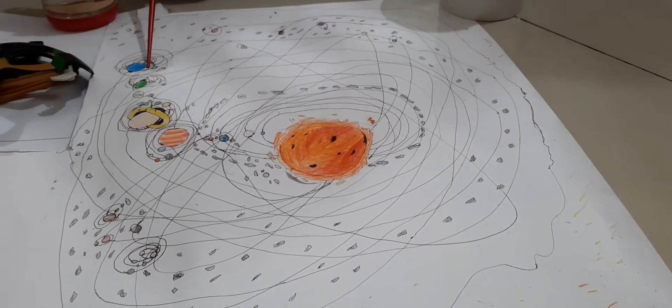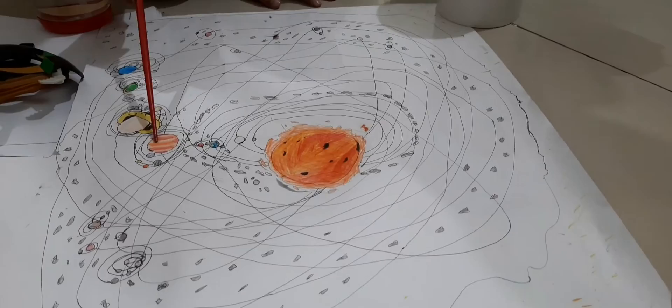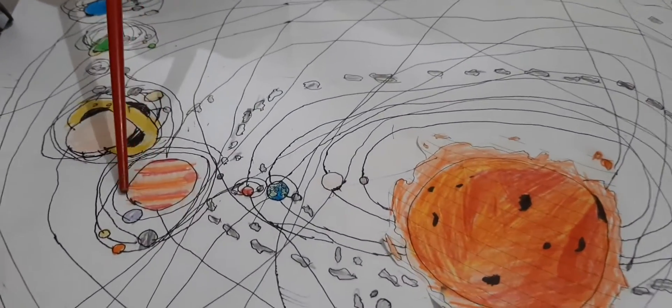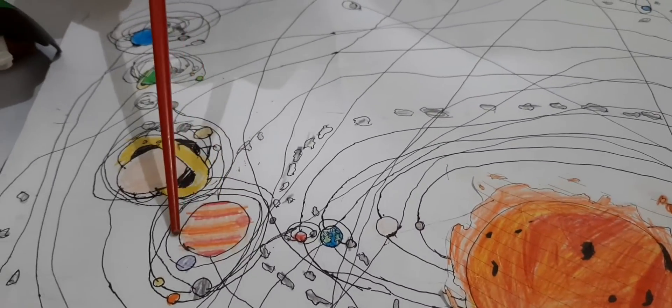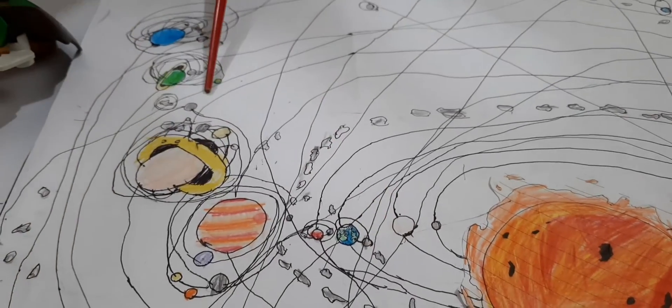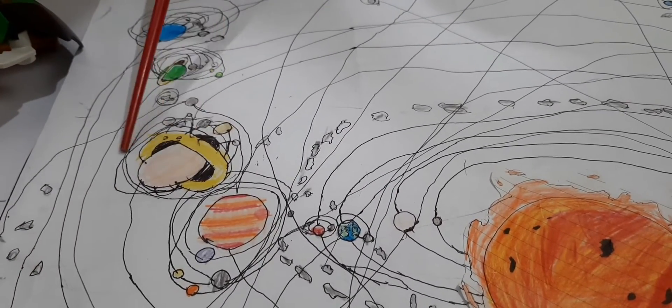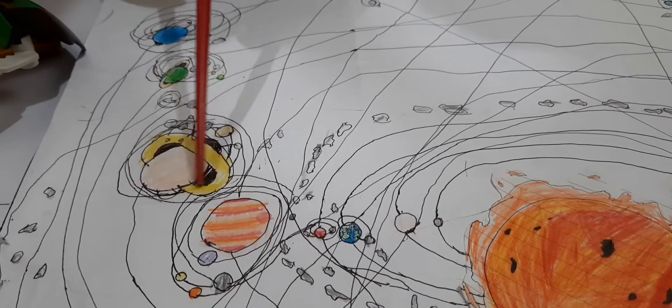Here are the gas planets. The first one is Jupiter. It's the biggest planet of all. Here's Saturn, the second gas planet.